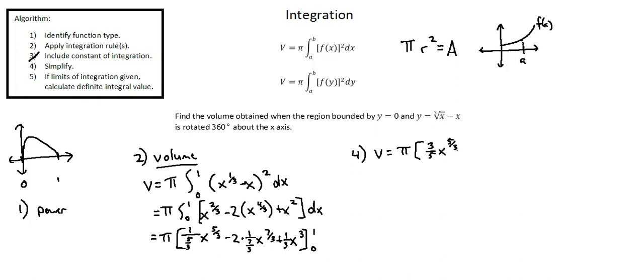Negative two times one over seven thirds is negative two times three over seven. Which is negative six over seven times x to the power of seven over three. Plus one third x to the power of three from zero to one.